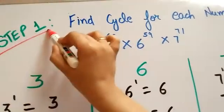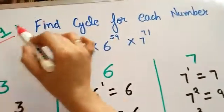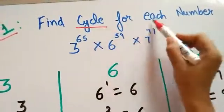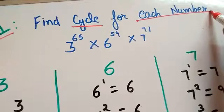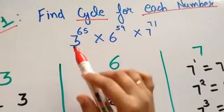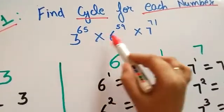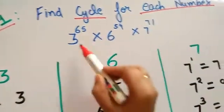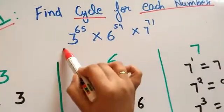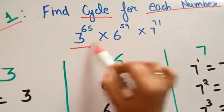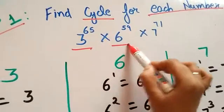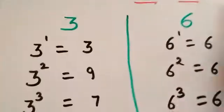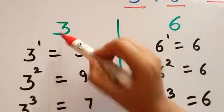Step 1 is to find the cycle for each number. So we have this as our question. We have to find the cycle for 3, 6, and 7. Let's find out the cycle for 3.